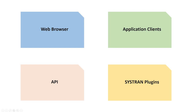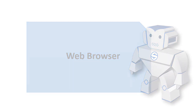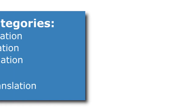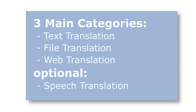Now let's have a look at the first of these four categories — the translation tools you can easily access through your web browser. There are three main categories to choose from: text translation, file translation, and web translation. There is also an optional speech translation feature, depending on your license.